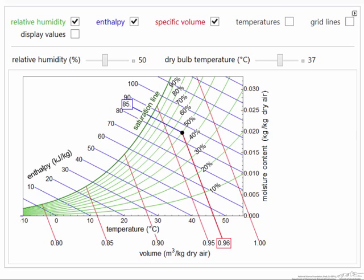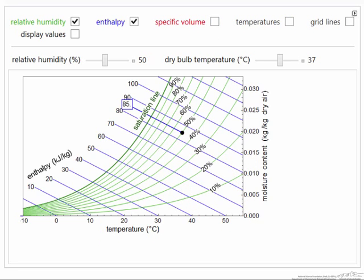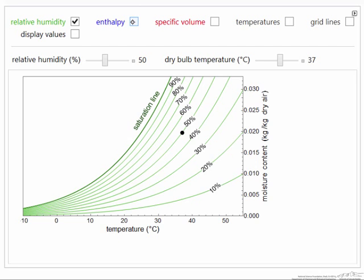So I can remove those displayed. I can also remove the specific volume lines, so that again, things are less complicated. I can also remove the enthalpy lines, so now I just have relative humidity lines, which I could also remove the labels. As things get more complicated, they can get in the way.